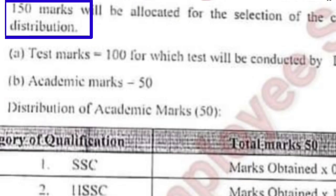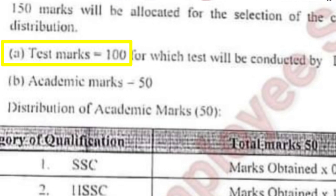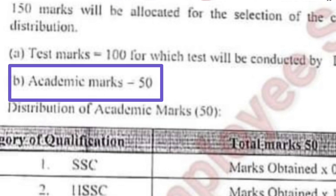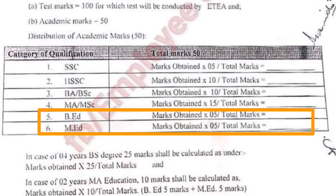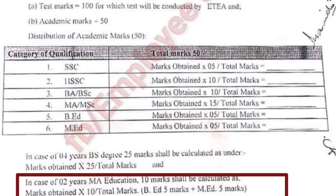Total marks 150 ہیں: 100 marks test کے اور 50 marks academic کے ہیں۔ اگر ایک بندے نے M.Ed کیا ہوا ہے کسی اور subject میں اور M.Ed education بھی کیا ہوا ہے تو M.Ed education کے marks کو 10 سے multiply کیا جائے گا اور total پر divide کر دیا جائے گا۔ ایک بات ذہن میں رہے کہ اگر بندے نے B.Ed کے بعد صرف M.Ed education کیا ہوا ہے، کسی اور subject میں master نہیں کیا تو صرف 10 marks count ہوں گے، 20 marks count نہیں ہوں گے۔